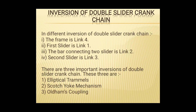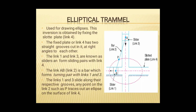The first inversion is the Elliptical Trammel, which is used to draw an ellipse. In this inversion, we fix link 4 — the slotted plate or frame. Link 1 and link 3 are sliders, and link 2 is the connecting bar, which we can also call the crank. Link 1 and link 3 slide in their respective grooves. If we take a point on the connecting bar, such as point P, and move the two sliders in the grooves while tracing point P, it will trace an ellipse.